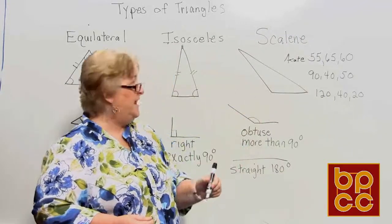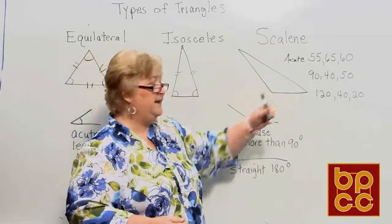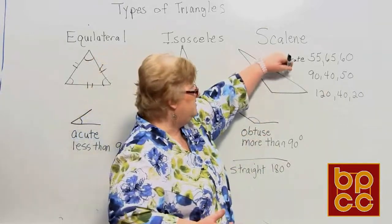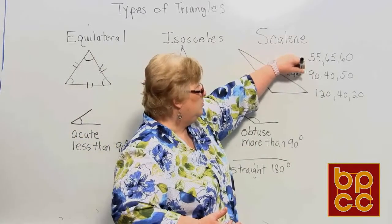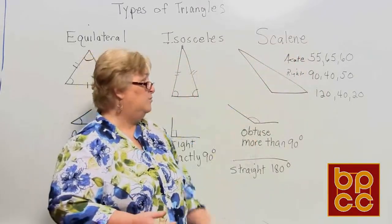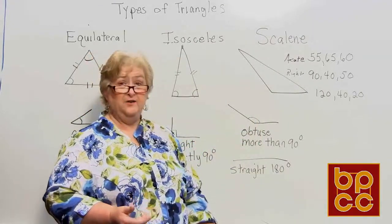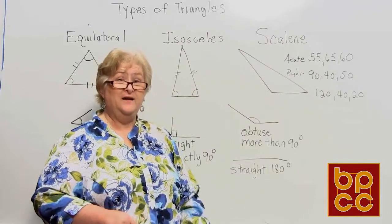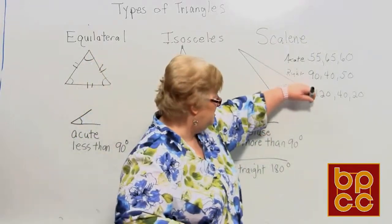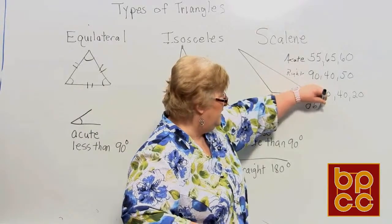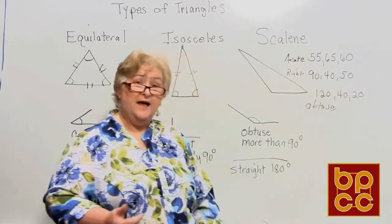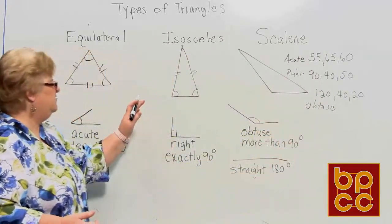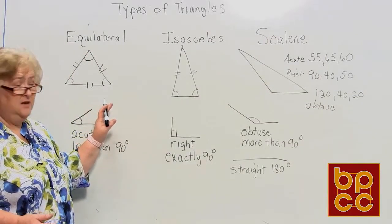The next triangle has angles of 90, 40, and 50 — that adds up to 180, but we clearly see one right angle, so we can call this a right triangle. The third has 120, 40, and 20 degrees, which also adds up to 180, but one angle is past 90 degrees, so we refer to this as an obtuse triangle.